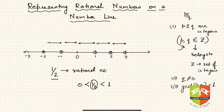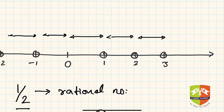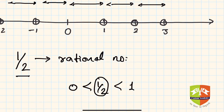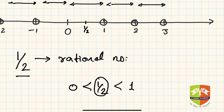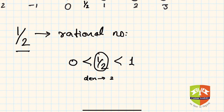There are infinitely many positions between zero and one, so where exactly? As the number itself suggests, one half is exactly half of one. So it is logical to find a point exactly in the middle of zero and one. The denominator is two, so I divided the segment between zero and one into two parts, and the first part — wherever it ends — is my one by two.